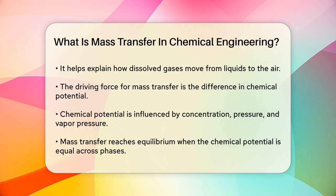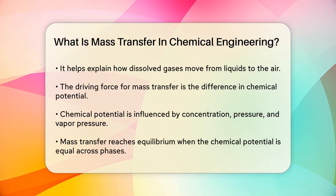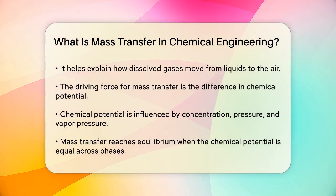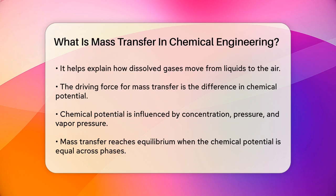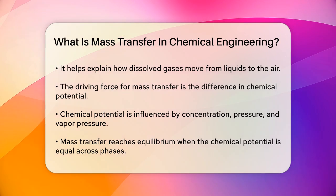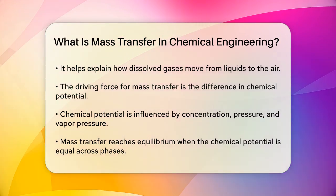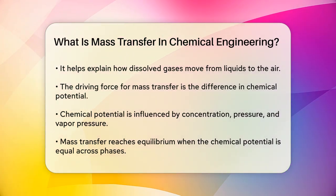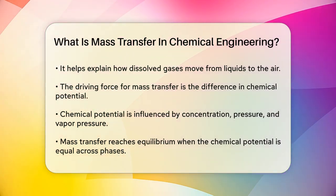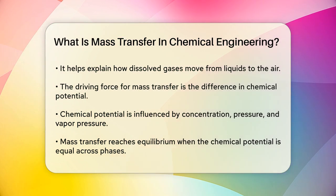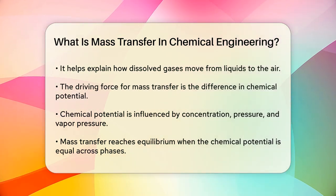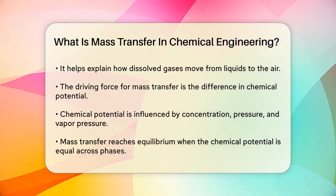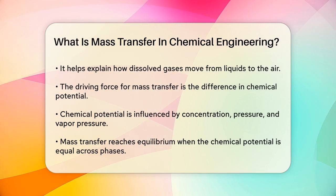Chemical potential is a measure that can be expressed using properties like concentration, pressure, and vapor pressure. When the chemical potential is higher in one phase than in another, the component will move from the phase with the higher potential to the one with the lower potential until they reach equilibrium.